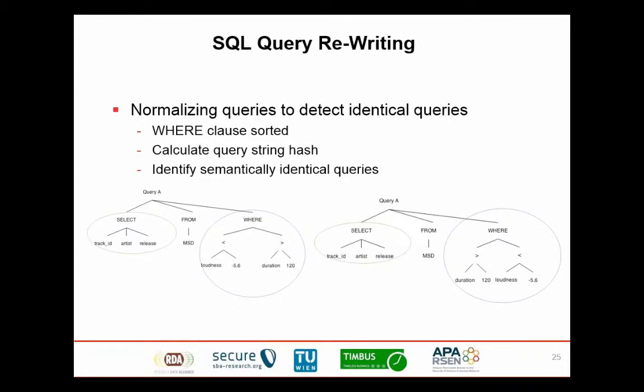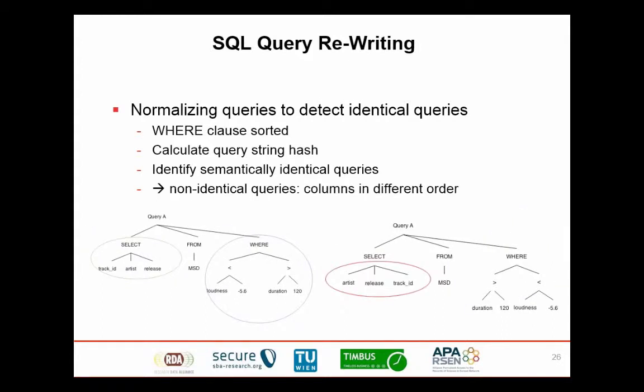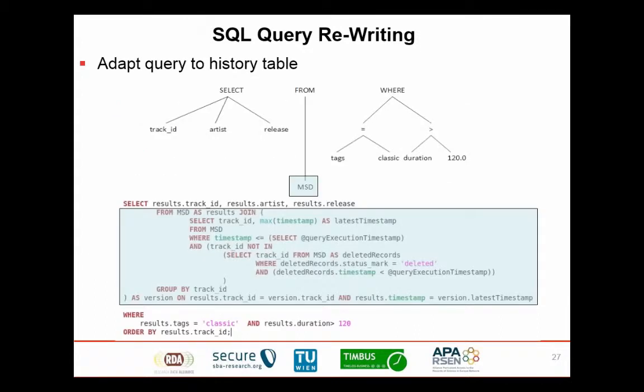For examples of the query rewritings: we sort the WHERE clause alphabetically by filter criteria — whether loudness comes first or duration comes first doesn't make a difference semantically. However, if the SELECT statement has a different column order — track ID, artist, release versus artist, release, track ID — those are treated as non-identical queries because the result set comes in a different column order. We then do a little rewriting to accommodate the history table and the timestamp. None of that is terribly exciting — it's standard technology — but it demonstrates we implemented it.